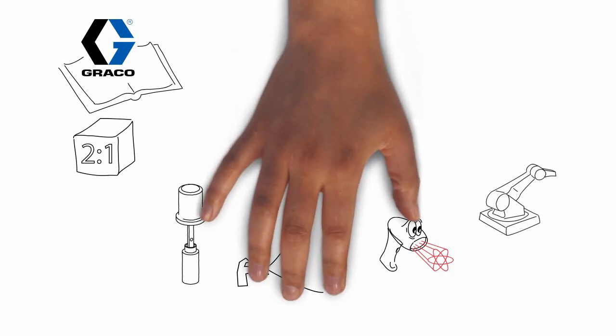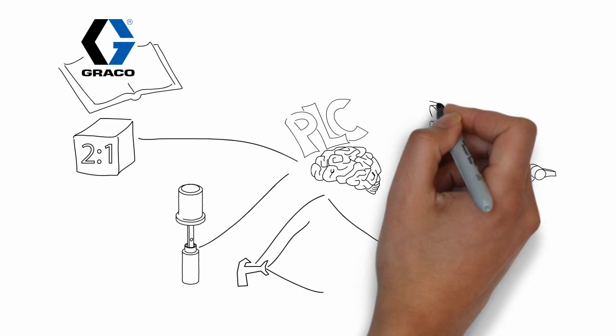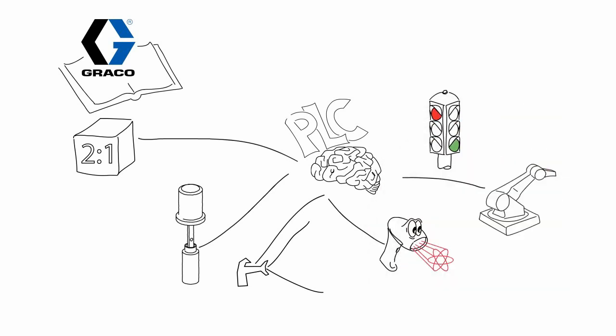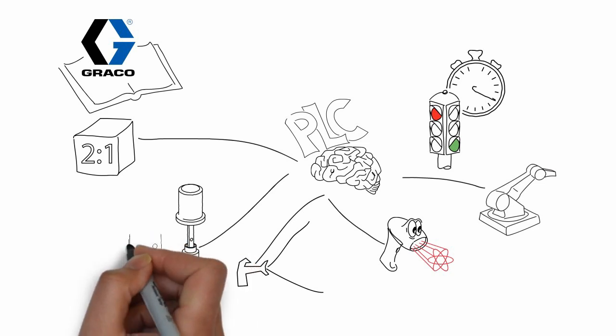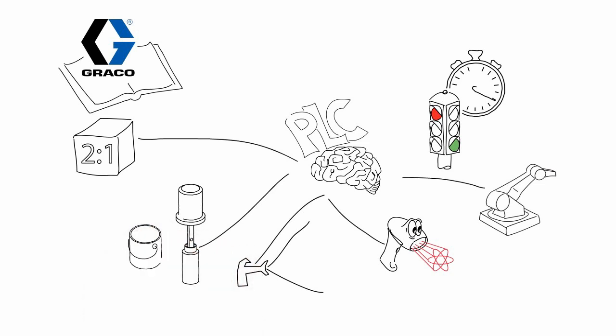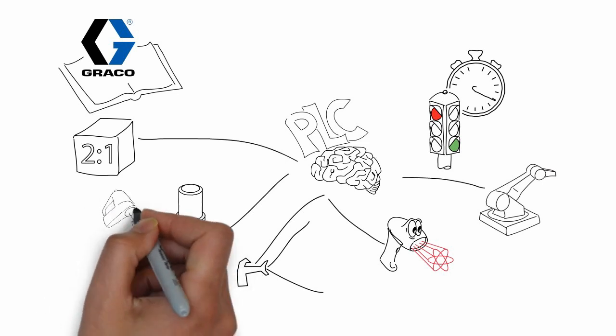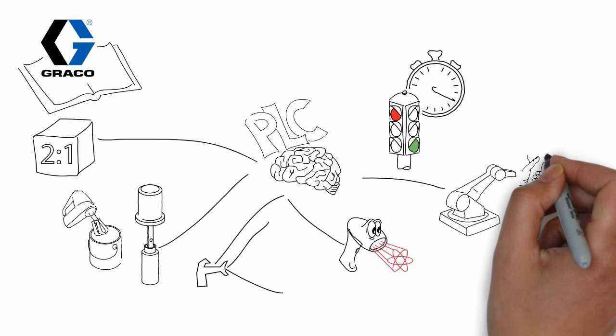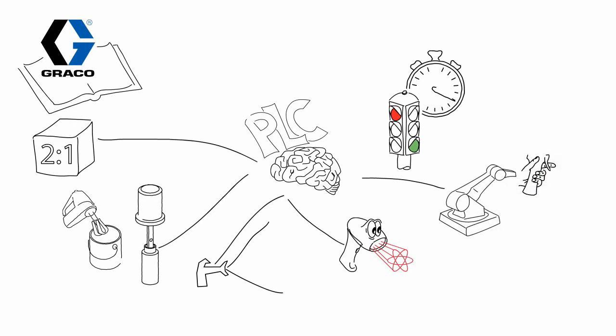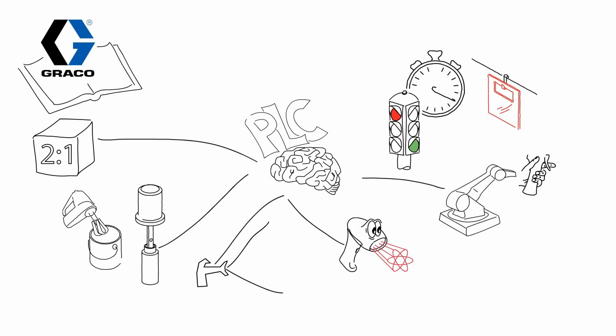The PLC, or brain, monitors the entire system telling the components to go on and off in the correct order, and for the correct amount of time. So, the pump is pumping the material, the proportioner is measuring and mixing it, and the finger on the gun trigger is now on the end of the robot arm. The batch of widgets coming down the conveyor on hangers are all getting a nice red coating of paint.